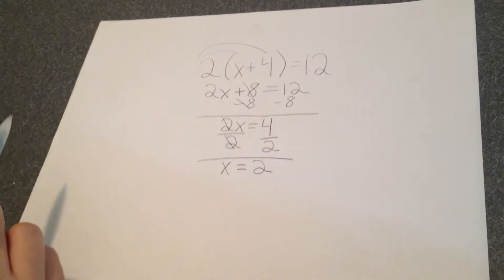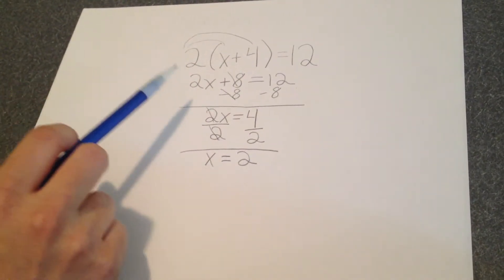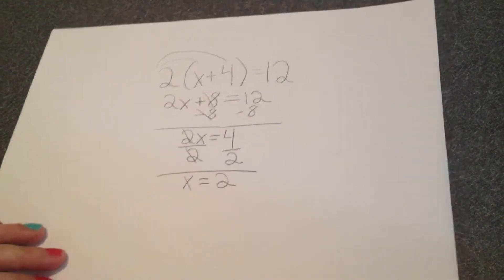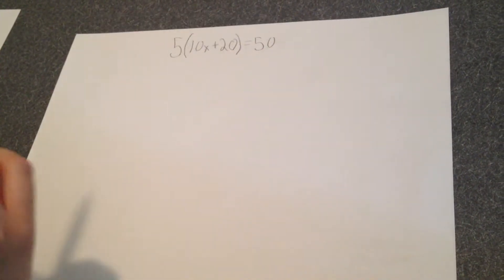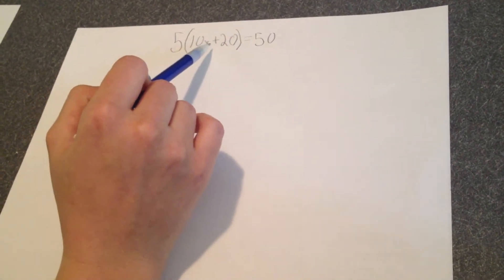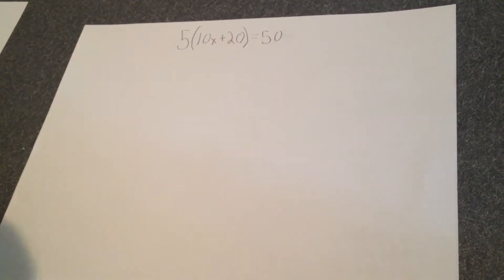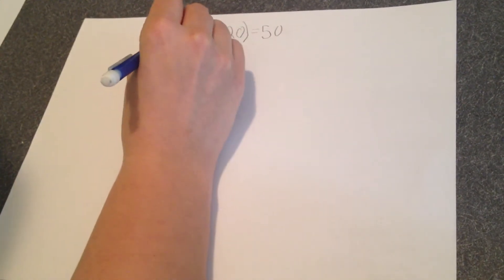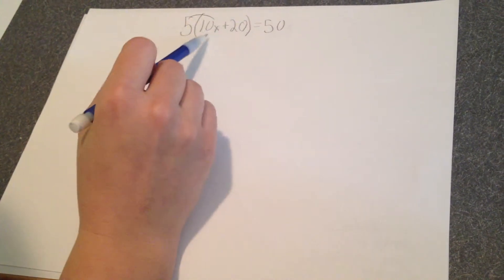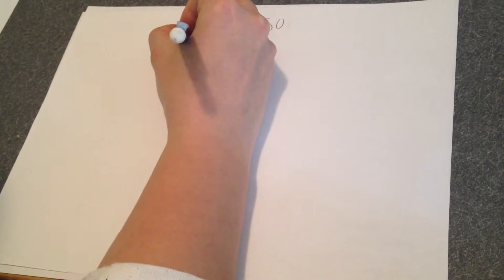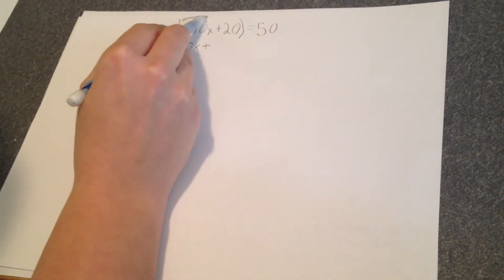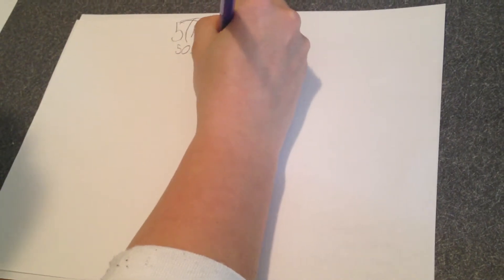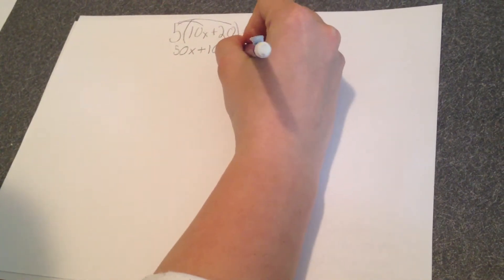Some reminders: we always distribute first, then isolate and solve for x. Our next problem is 5 times the quantity 10x plus 20 equals 50. We start by distributing our 5 first — making sure we distribute to every single term inside the parentheses. So 5 times 10x is 50x — don't forget to bring down your x. Then bring down our positive sign, and 5 times 20 gives us 100. Re-copy everything after the equals sign: equals 50.